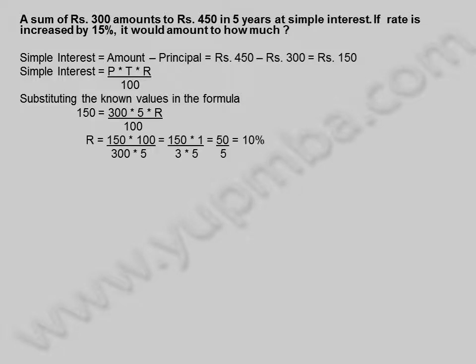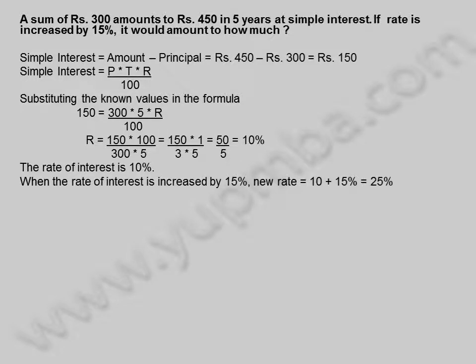Substituting the known values: rate equals 150 into 100 divided by 300 into 5, which equals 150 divided by 15, equal to 10%. The rate of interest is 10%. When the rate of interest is increased by 15%, the new rate equals 10 plus 15, which is 25%.